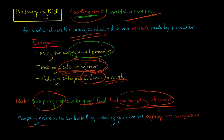You can't quantify non-sampling risk in the way that you can with sampling risk. Sampling risk can also be controlled by using probability and so forth to ensure you have the appropriate sample size. The issue with sampling risk is having a non-representative sample — but what if we had a larger sample size? We might have ended up making the correct decision.